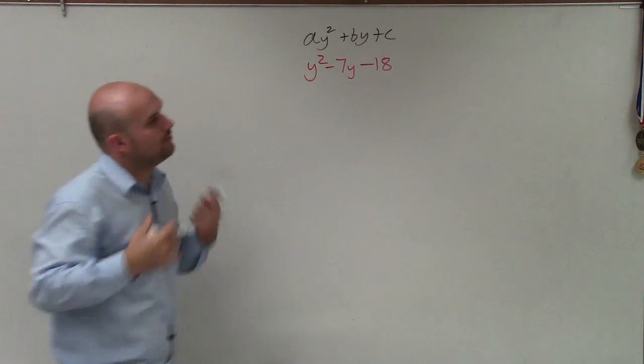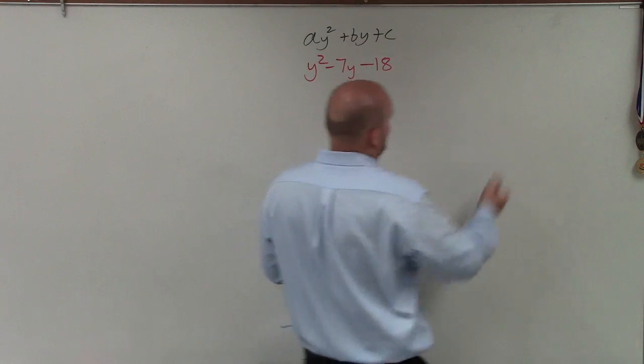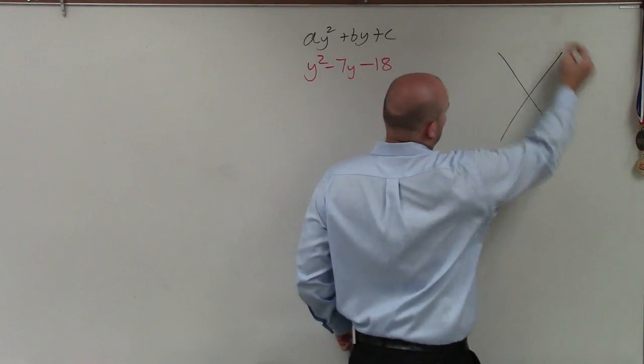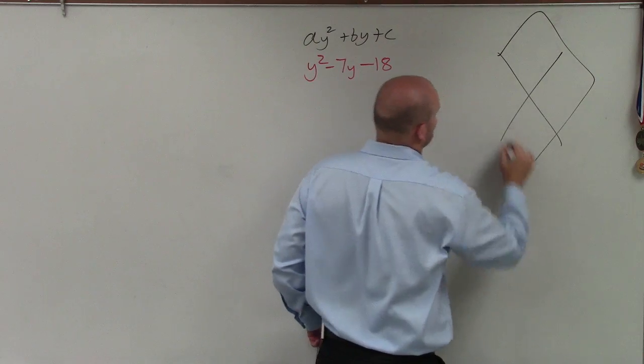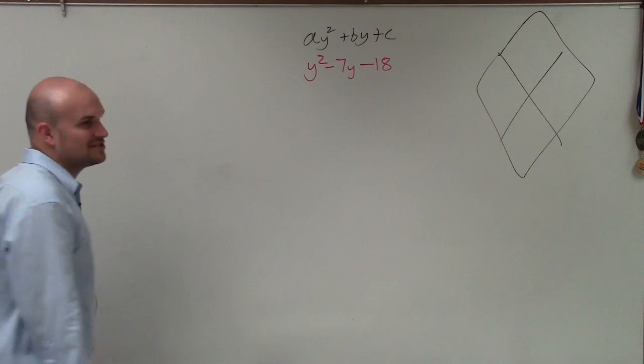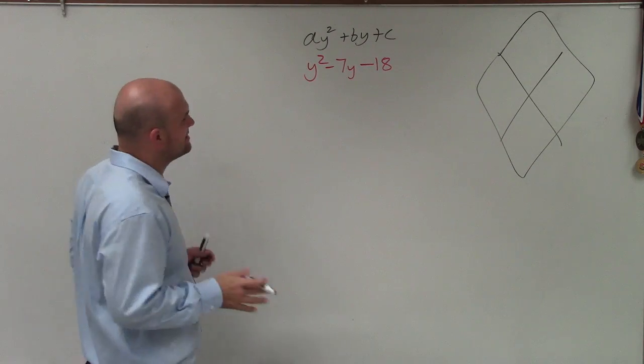So when factoring this using the diamond method, what we do is create an X, which really could be a diamond. I don't actually like doing a diamond, but here we go. There's a diamond. I actually just like using the X method, but it's called the diamond method.